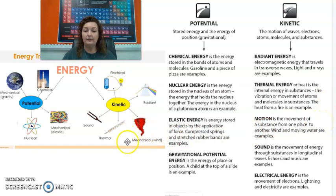Motion is often known as mechanical. Mechanical energy is the movement of a substance from one place to another. Wind and moving waters are great examples of mechanical. Something I do want to mention about mechanical energy: notice it's here under kinetic, but it's also here under gravitational potential, and it's also here under elastic. So mechanical energy is the only form of energy that is both potential and kinetic. It just depends what kind you're talking about.